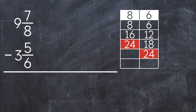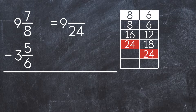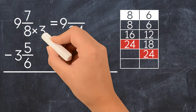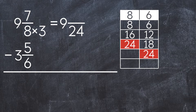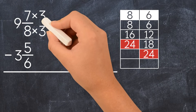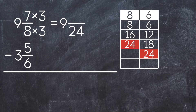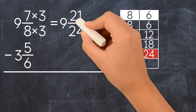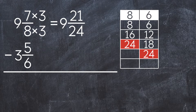Let's rename the first mixed number. To get 24 in the denominator, we have to multiply 8 by a number. That number is 3. We also need to multiply the numerator by 3. So now we have 9 and 21 twenty-fourths.